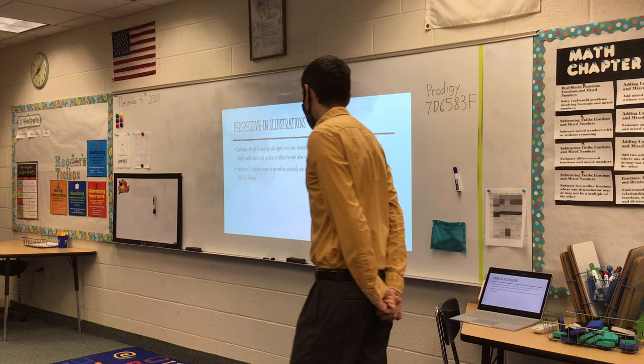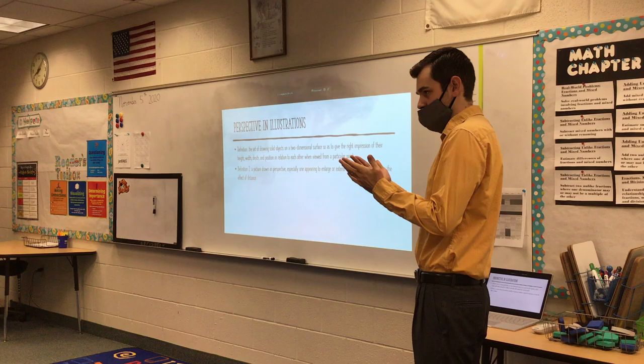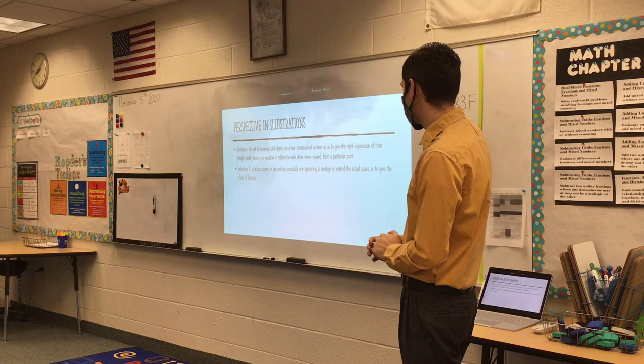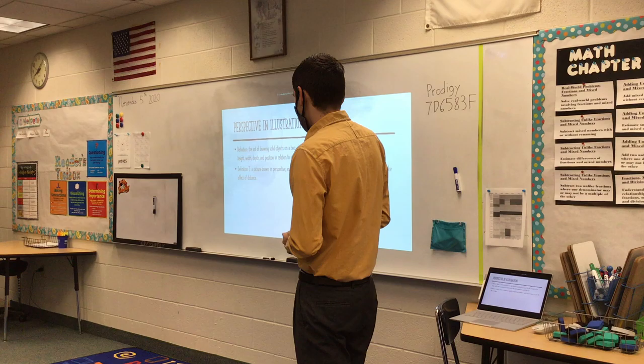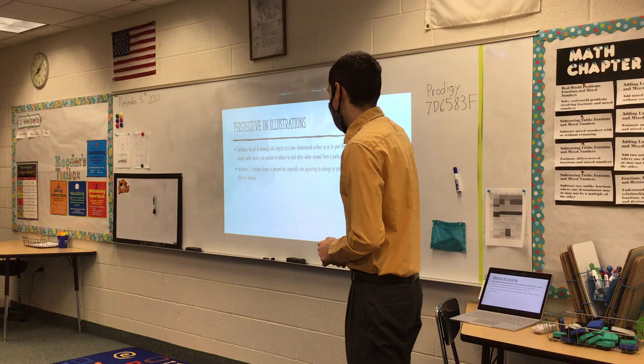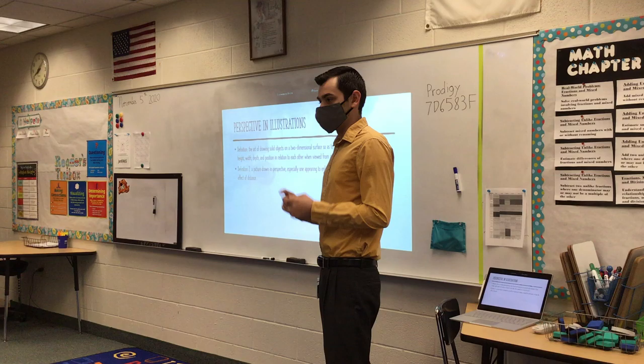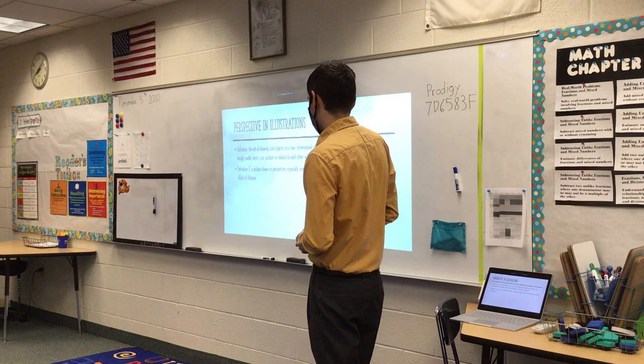So perspective in illustrations — here's the definition. The art of drawing solid objects on a two-dimensional surface — because remember, paper is two-dimensional. We live in a three-dimensional world, but when we write on paper, that's two-dimensional. So a two-dimensional surface, so as to give the right impression of their height, width, depth, and position in relation to each other when viewed from a particular point. Essentially, artists with perspective are trying to make the paper look realistic — trying to make it look like it's almost real.